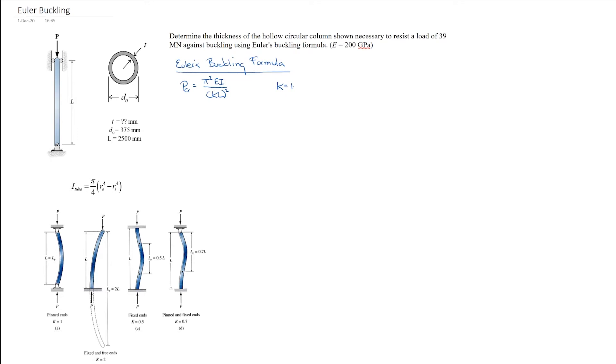So what I want to do is write out my formula for the moment of inertia. So I of the tube is equal to π/4 times my radius external to the 4th minus my radius internal to the 4th, and that's equal to π/4.